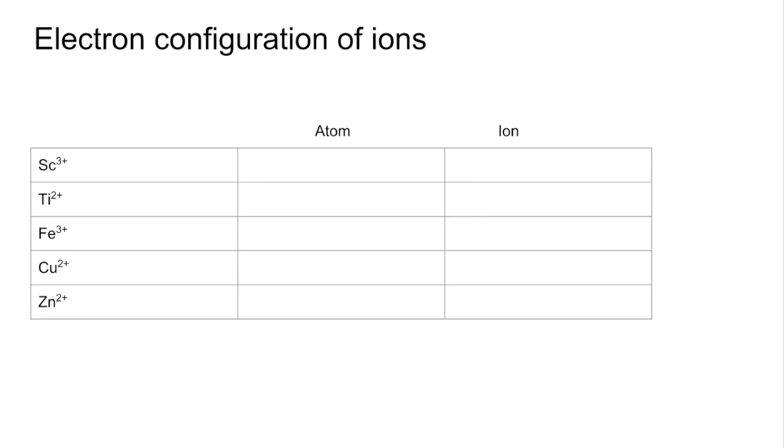Looking at the ions now, I've got 5 ions there in the table. We're going to look at the atom configuration first and then lose the relevant number of electrons to get the ion. The thing to know is 4S fills before 3D but 4S is also lost before 3D. You can think of it as first in first out in terms of 4S.